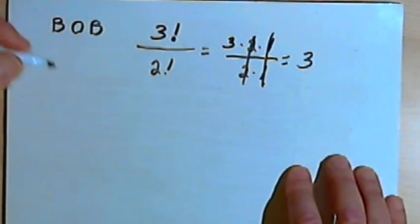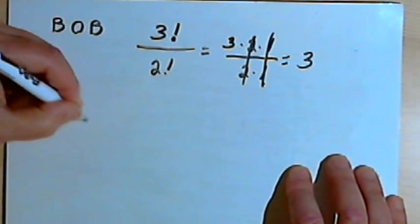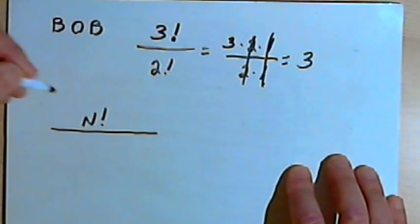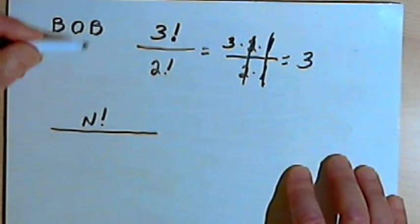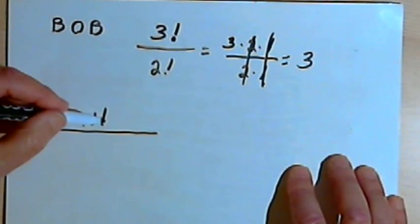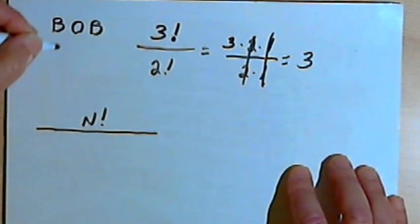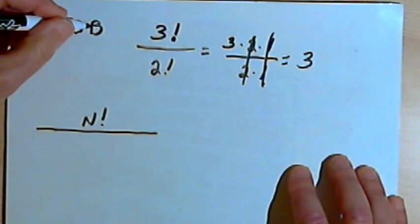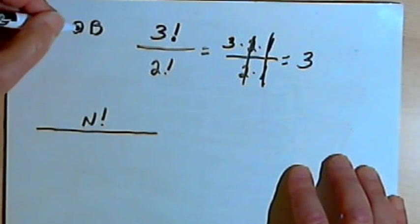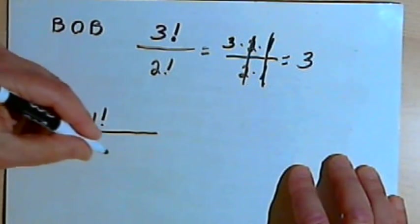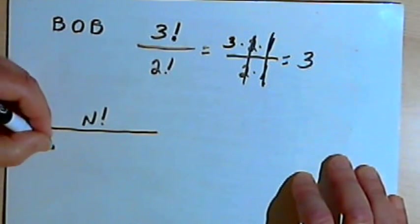Now in general, we're going to have a formula that looks like this. Once again, I'll have a fraction. The numerator of the fraction will be N factorial. In other words, the number of elements in the set that I've got, the factorial of that number. And then, because I might have more than one letter that's repeated, I might have a number of different letters repeated, I'm going to have a number of different elements in the denominator of the fraction.